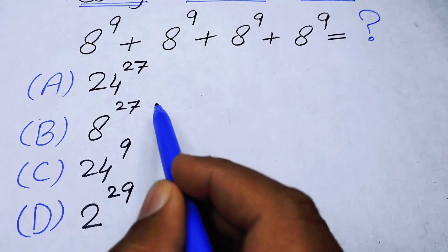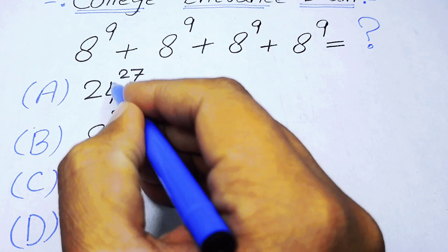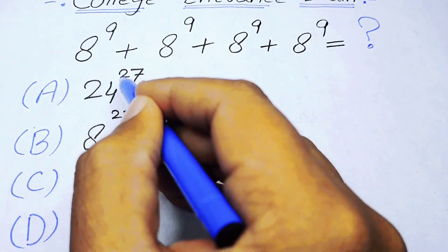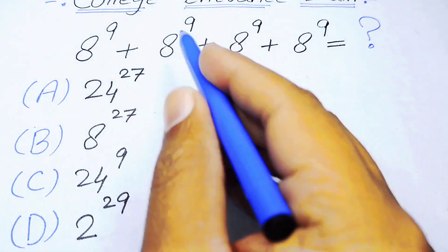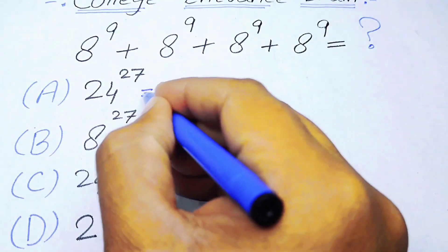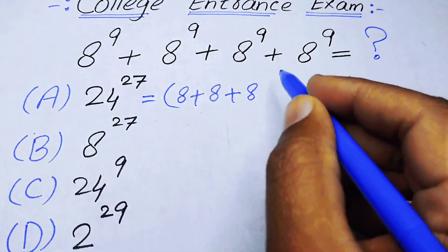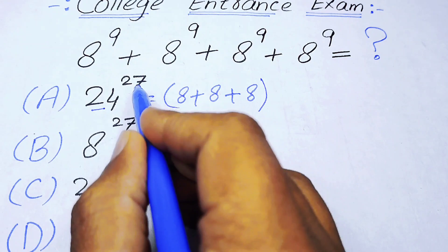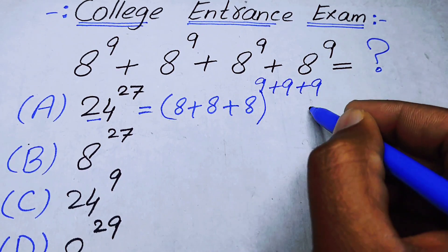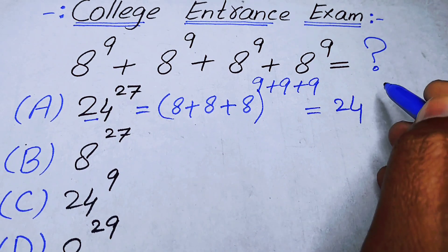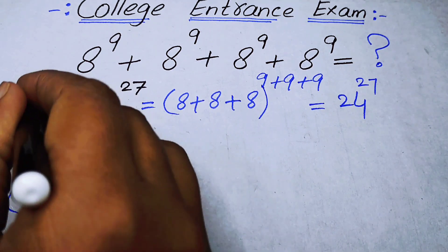First we will check option A. We have 24, and we can write 24 in terms of 8 as 8 plus 8 plus 8, which equals 24. The power 27 can be written as 9 plus 9 plus 9. So option A gives 24 to the power of 27, but this answer is wrong.